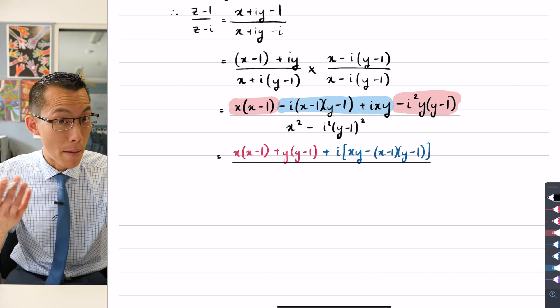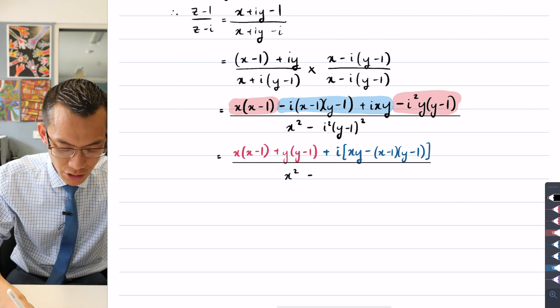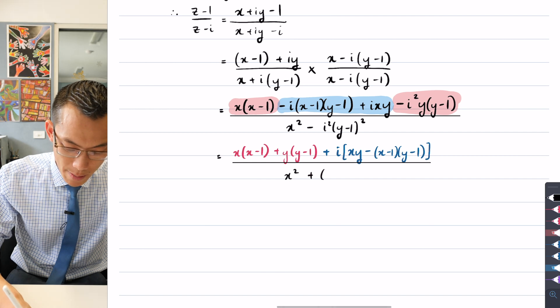I can do that same minus i squared cancellation, so that just gives me plus (y - 1) all squared.